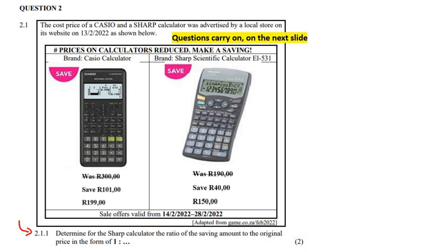It says that the cost price of a Casio and Sharp calculator is advertised in a local store. So here we've got the Casio and here we've got the Sharp. They tell us that it was 300 rand, but now it's selling for 199, so you would save 101 rand. And then this calculator was 190, but now it's only selling for 150, so you could save 40 rand.